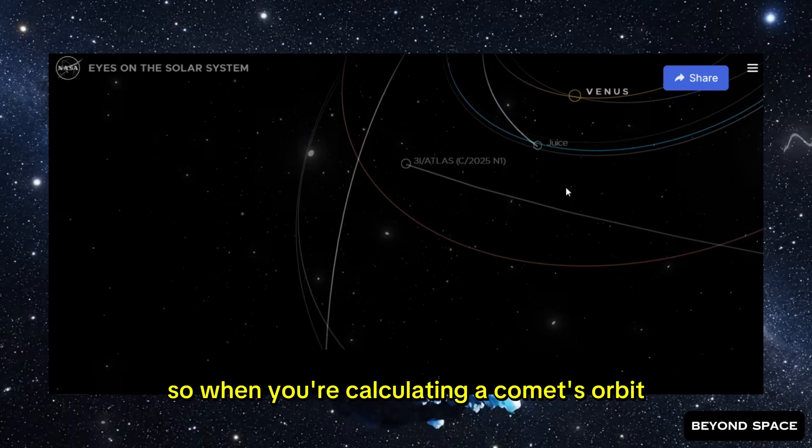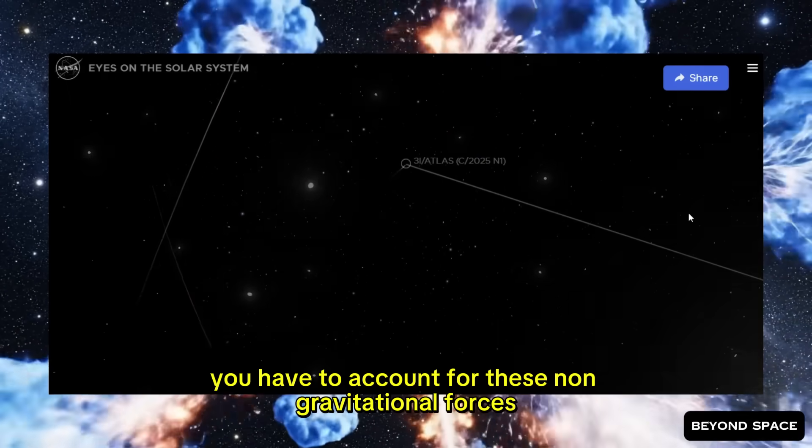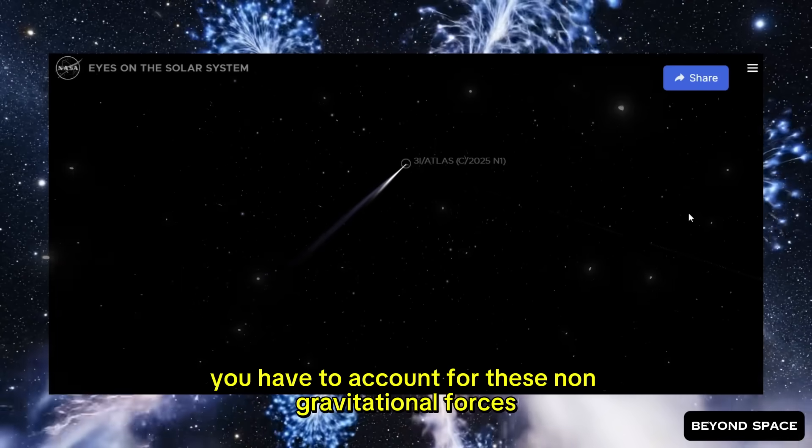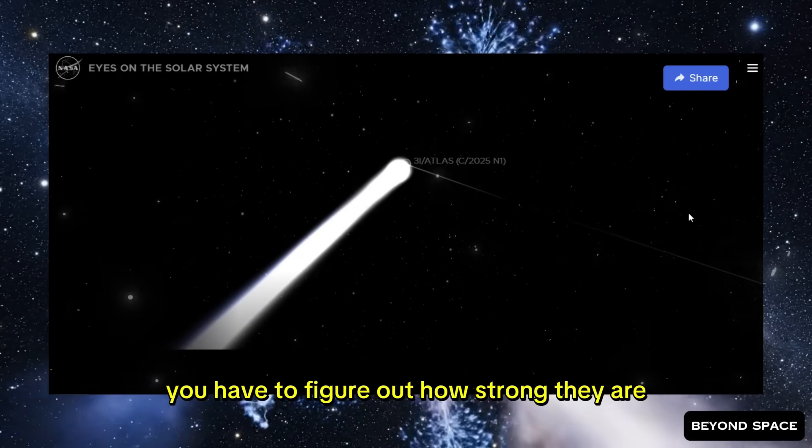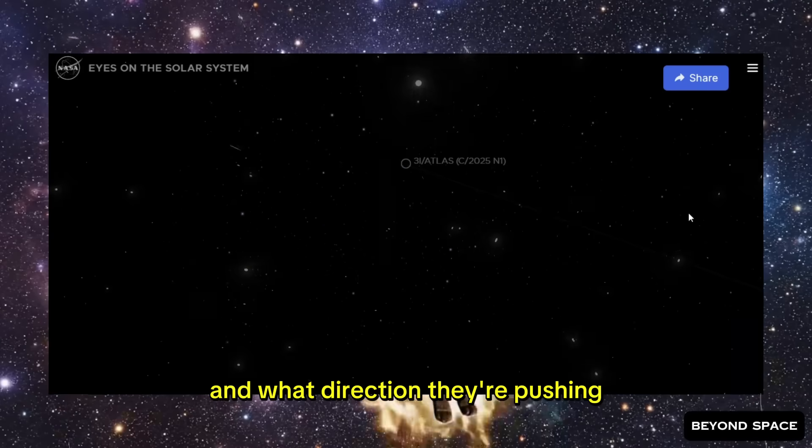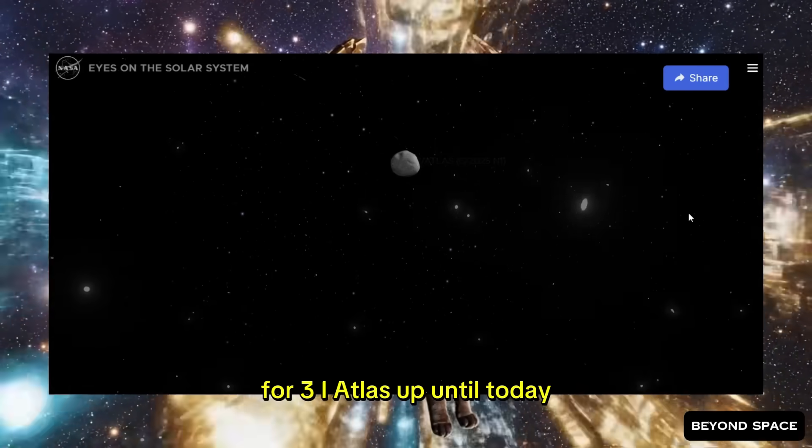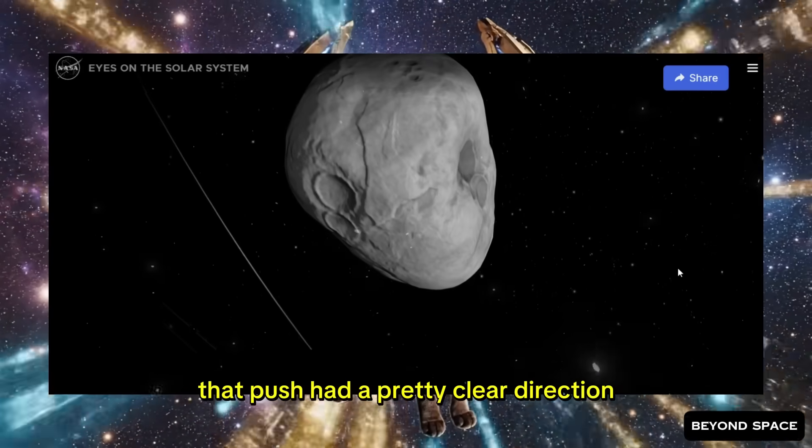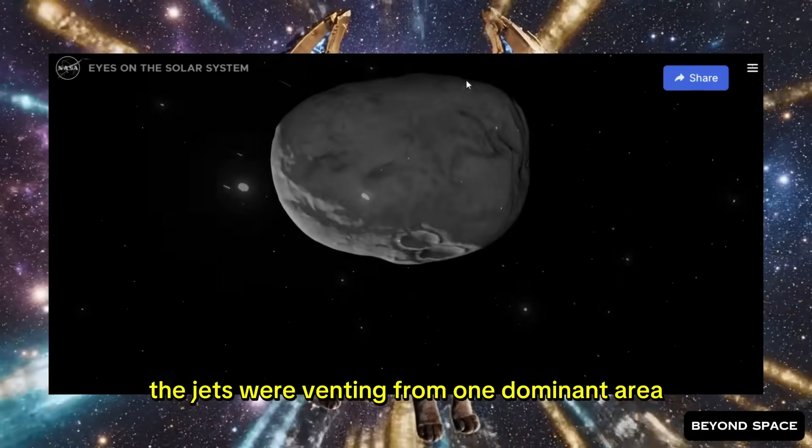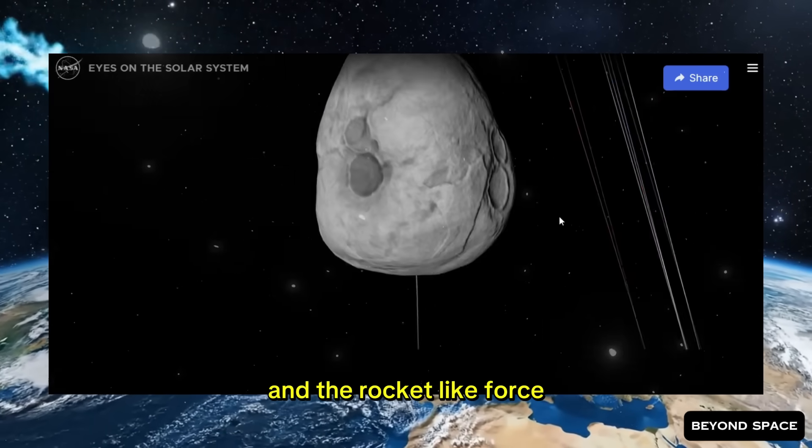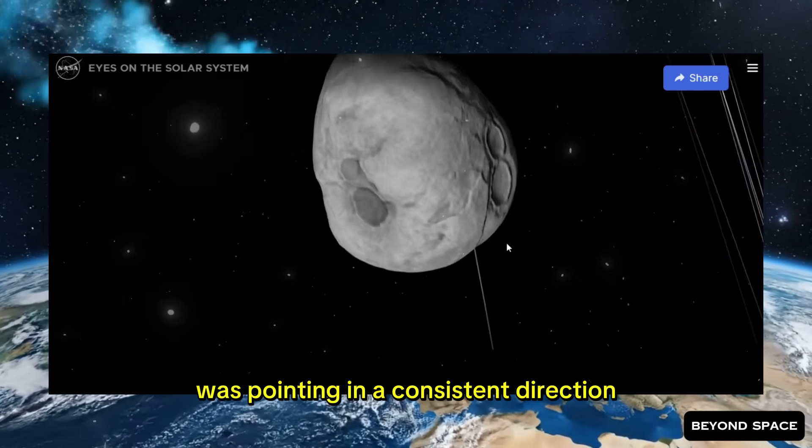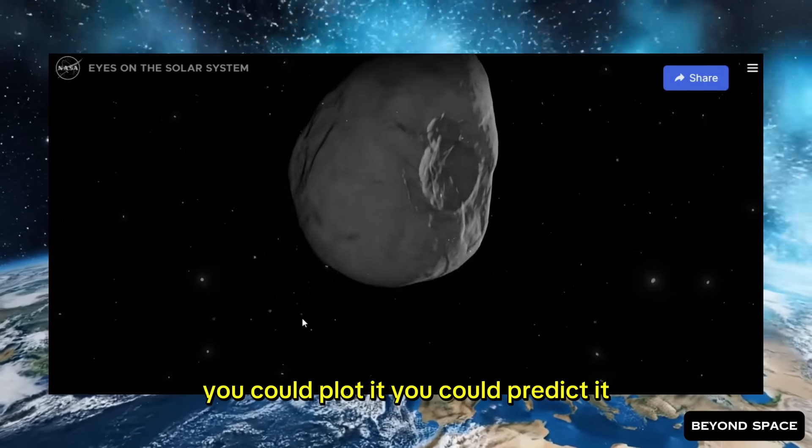When you're calculating a comet's orbit, you have to account for these non-gravitational forces. For 3i Atlas, up until today, that push had a pretty clear direction. The jets were venting from one dominant area, and the rocket-like force was pointing in a consistent direction. You could plot it. You could predict it.